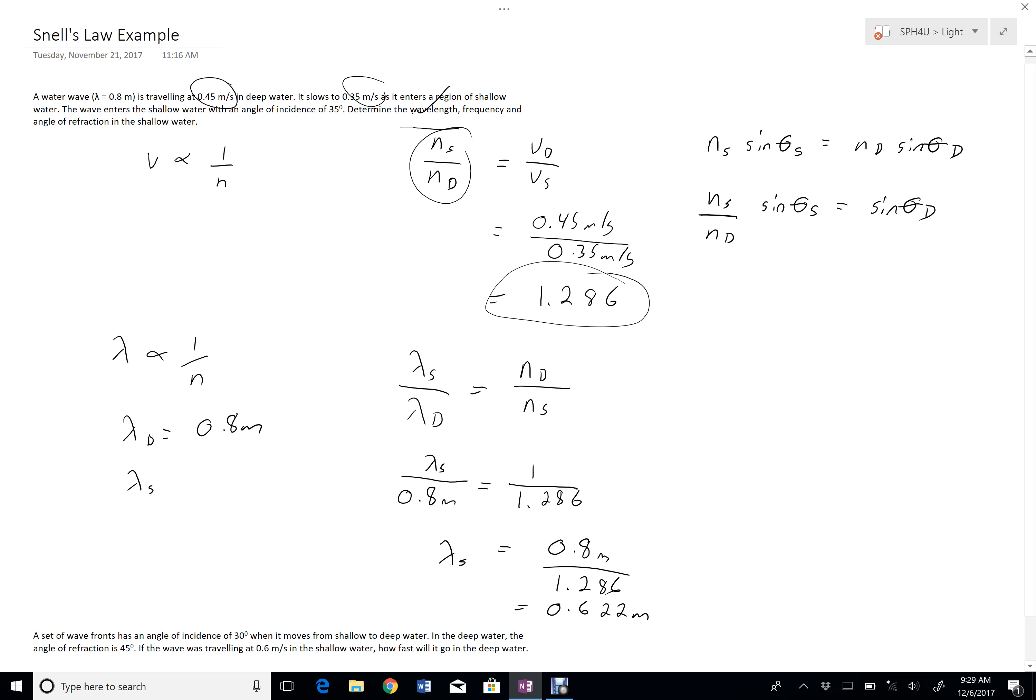And then looking at my question, it says, the wave enters the shallow area with an angle of incidence of 35 degrees. So that's as it comes in. So that's actually in the deep water. So that's the theta in the deep water. Now I can replace this with the known ratio 1.286. And I'm just looking for sine theta s here. Divide both sides by 1.286.